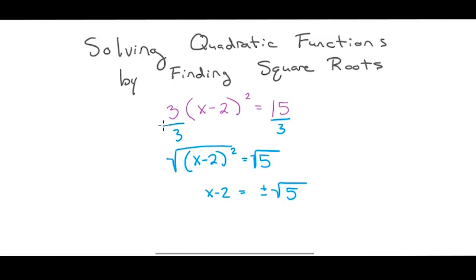I still want to get x by itself, so I'm going to add 2. And when you write these, you want the radical to come second. So I'm going to write this as 2 plus or minus the square root of 5.